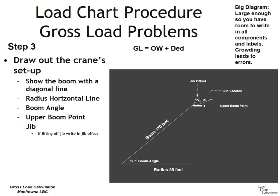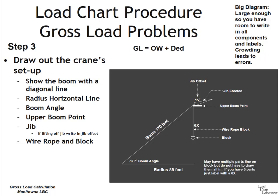If making the pick off the jib, write in the jib offset — that's part of the configuration and will affect your gross load numbers. Draw in wire rope and block hanging off the main boom. If you have multiple parts of rope, use a notation like 6x to indicate six parts of line. Also draw in wire rope and ball hanging off the jib if that's part of your configuration. And don't forget the rigging — it's a common mistake to forget it.